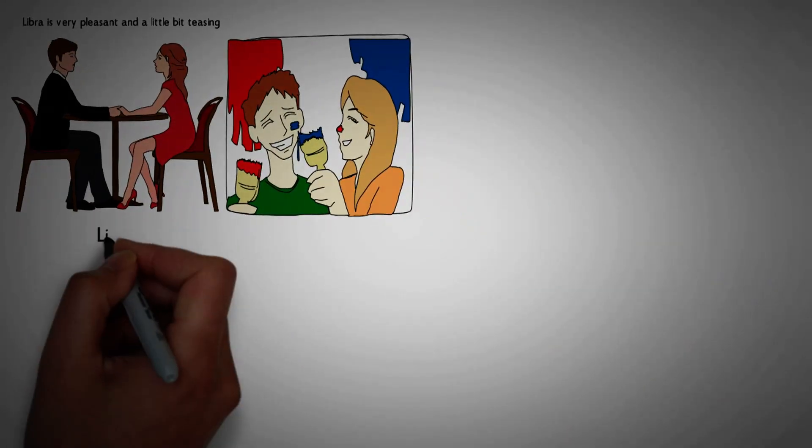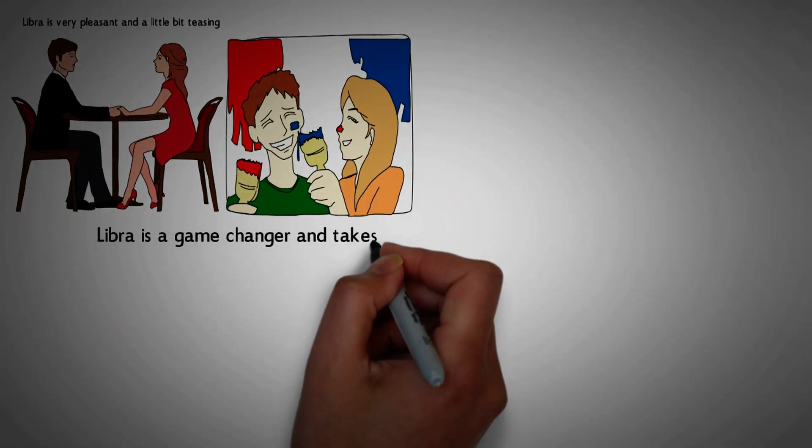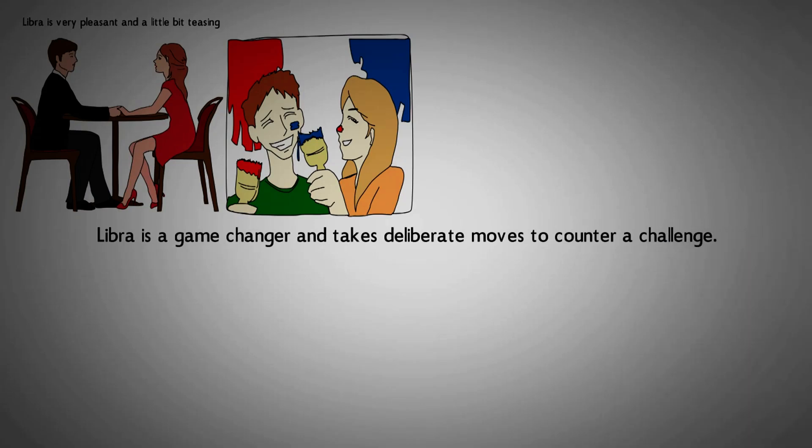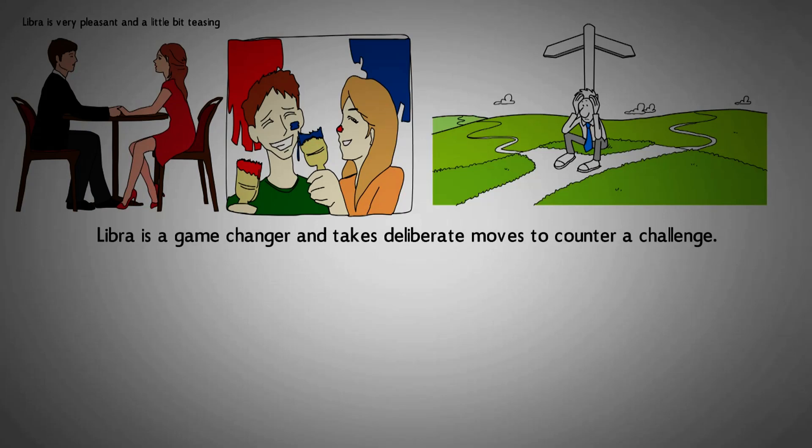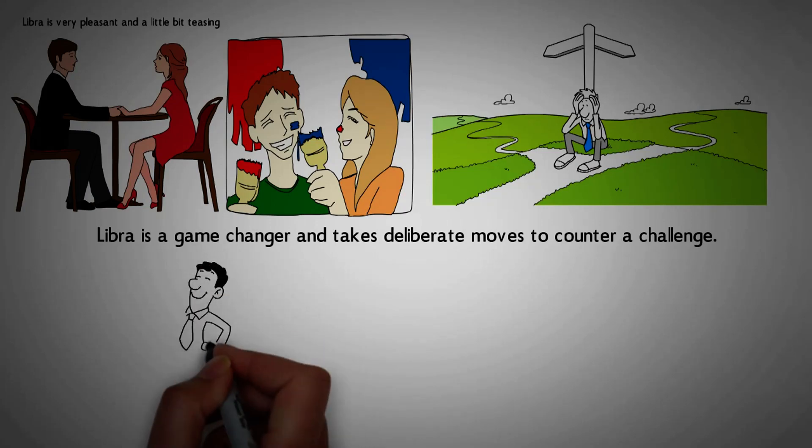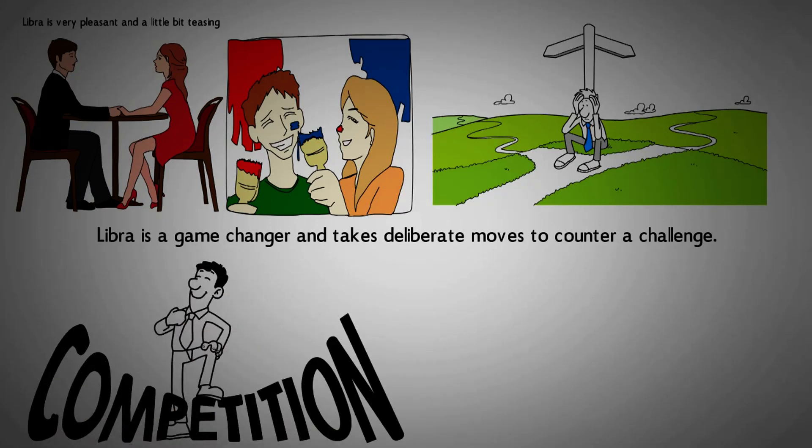Number 13. Libra is a game changer and takes deliberate moves to counter a challenge. Libra avoids making foolish decisions. They are tactful and evaluate the available options to maximize their benefits in the face of competition.